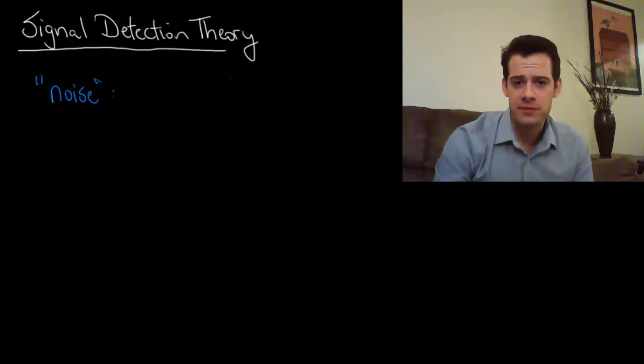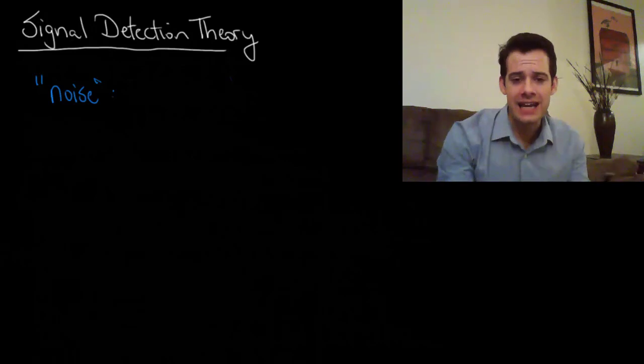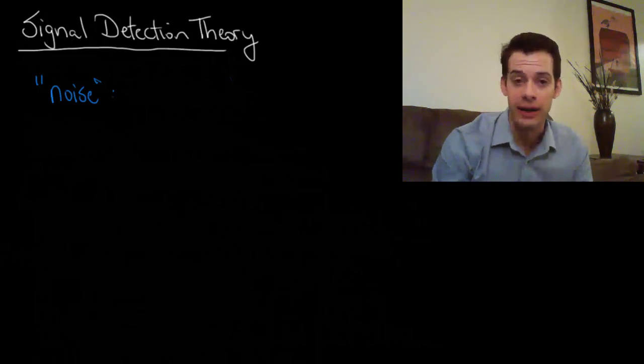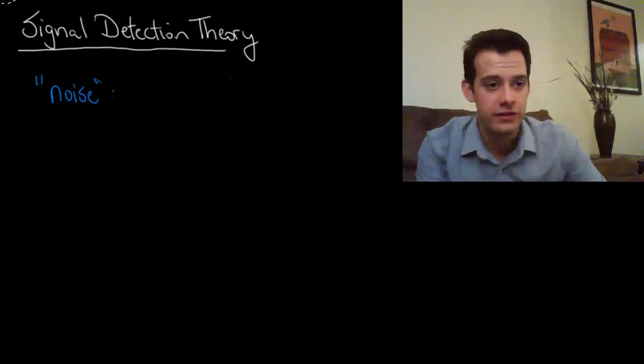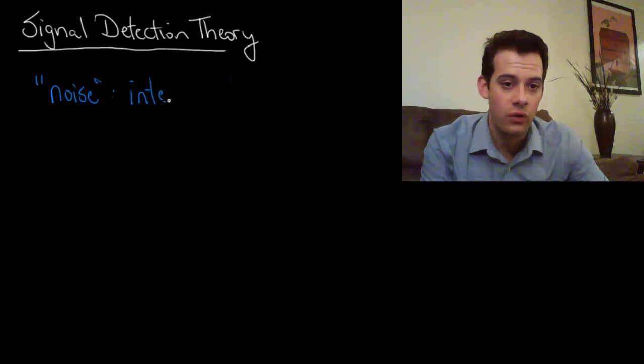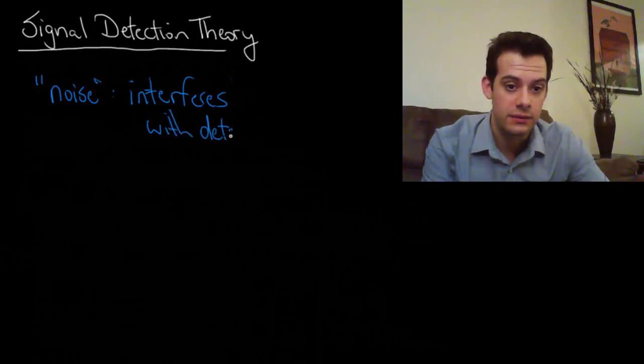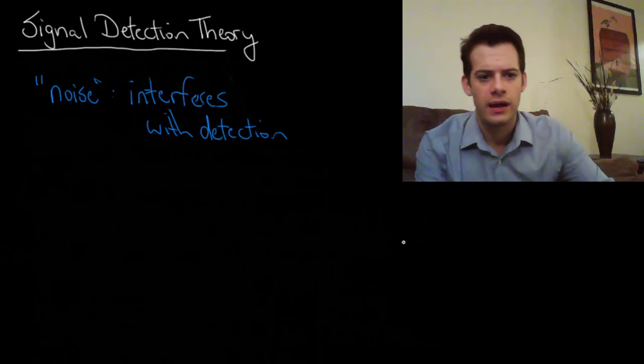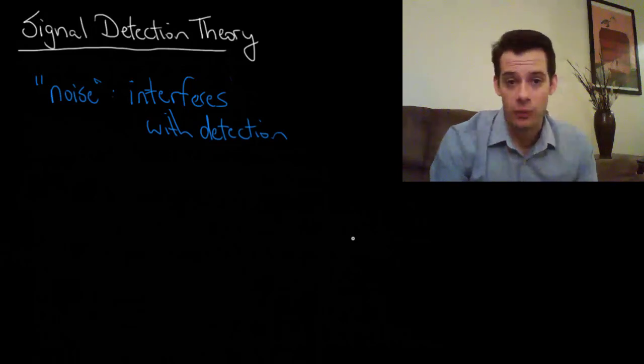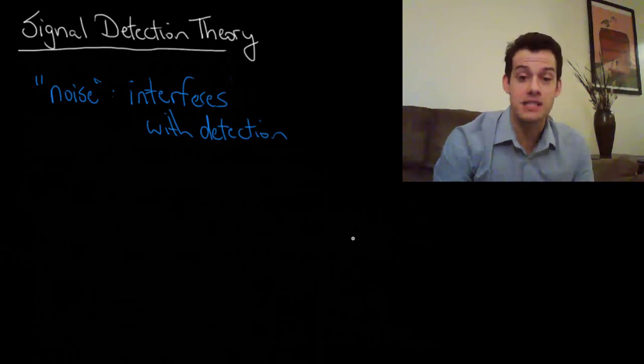One of the problems that we have in both of these situations is a problem of noise. What do we mean by noise? A noise is anything that can interfere with our detection of a stimulus. It's not specific to hearing. It's anything that interferes. We use this term noise to refer to anything that interferes with detection. What you'll realize is that noise is everywhere for all of our senses. The world is noisy.